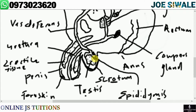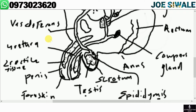The sperm duct, also referred to as the vas deferens, helps to transfer sperm from the epididymis to the urethra during ejaculation.